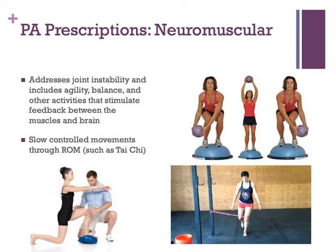A typical result of arthritis is the loss of proprioception — the feedback to the brain regarding joint position and motion, or where your body is in space. This loss contributes to the instability noted earlier. Neuromotor training addresses joint proprioception and includes activities such as agility, balance, and other activities that stimulate the feedback between the muscles and the brain. Although general guidelines suggest two to three days per week, a person would definitely benefit from more frequent activity — five to seven days per week. A good example of neuromotor training is Tai Chi, which trains the connection between the nervous system and the muscles and addresses all necessary components.